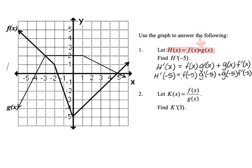First we need to determine the value of f of negative 5 — that is, when x is negative 5 on this graph, what's the y value on function f of x? Utilizing the graph, you can see that f of negative 5 is equal to 4.